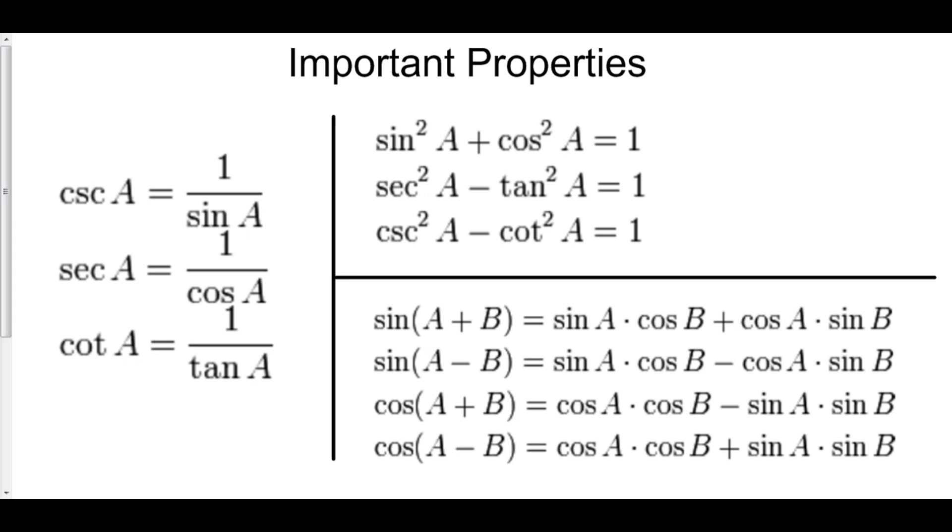You have to know that cosecant is 1 over sine, that secant is 1 over cosine, and that cotangent is 1 over tan, or cosine over sine if you will.